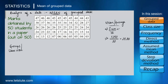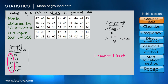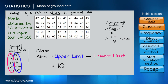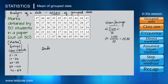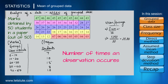Since the marks range from 1 to 50, we divide them into classes: 0–10, 10–20, 20–30, 30–40, and 40–50. Each class has a lower limit and an upper limit, and the difference between them is 10 marks — this is called the class size or class difference. Now we group the students by the marks they secured: 7 students scored 0–10, 10 students scored 10–20, 15 scored 20–30, 8 scored 30–40, and 10 scored 40–50. This column is called the frequency column, denoted as fi.